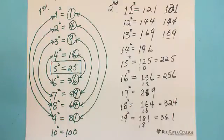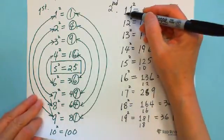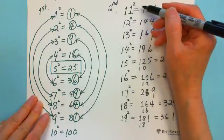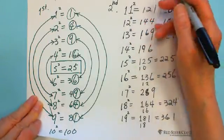So when squaring a number greater than 10, whether it's 2 digits or even 3 digits — here I've just introduced 2 digits. If you practice and feel comfortable with 2 digits, then you can move to 3 digits. For 2 digits: square the first number, square the second number, and then add 2 times the product of those three numbers.